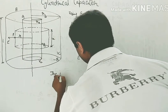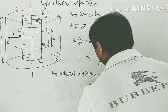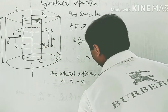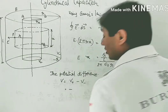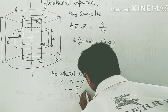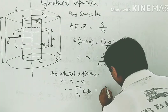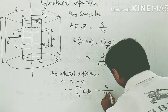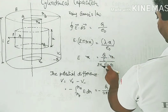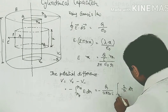Placing the value of E back, we write the constant term outside the integration: minus Q upon 2 pi epsilon naught into l, and only 1 by r is the variable inside. So we integrate 1 by r dr from R_B to R_A.